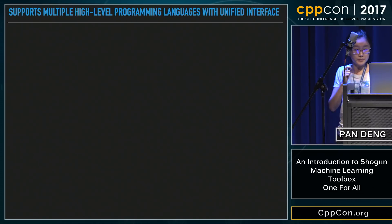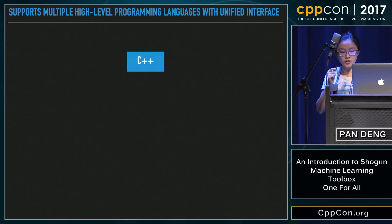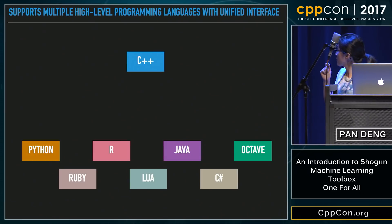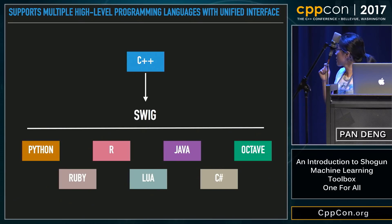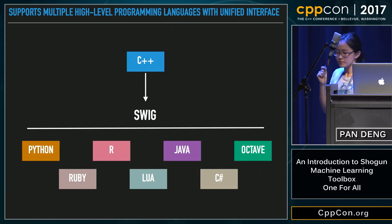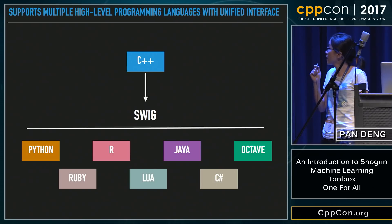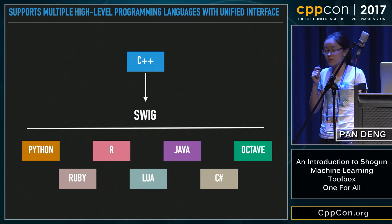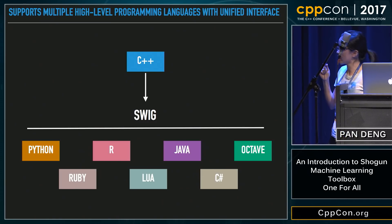Let's move on to the next point. Though mostly written in C++, Shogun actually supports multiple high-level languages pretty well via SWIG — a software that enables bidirectional communication between C++ and its target languages. It basically allows one to use the Shogun library without knowing any C++. You may ask: I'm a C++ hacker, why do I care about this?